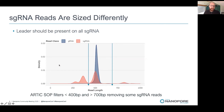Because subgenomic RNA reads are often shorter or in some cases longer, they are frequently filtered out by bioinformatic processes. The ARCTIC SOP recommends filtering reads below 400 and above 700 base pairs, but plotting genomic versus subgenomic read sizes shows that many subgenomic reads fall outside this range and would be lost. So if you want to perform subgenomic RNA analysis, you must do it on raw, unfiltered sequencing data.